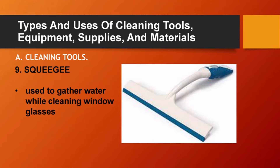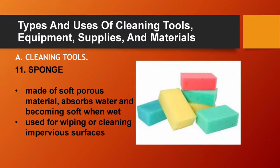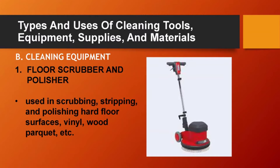Squeegee, used to gather water while cleaning window glasses. Spray bottle, used to squirt, spray, or mist fluids on a dirty surface. Sponge, made of soft porous materials, absorbs water and becomes soft when wet. Used for wiping or cleaning impervious surfaces.